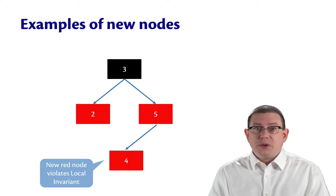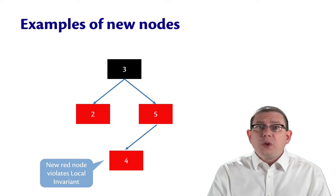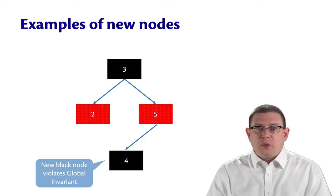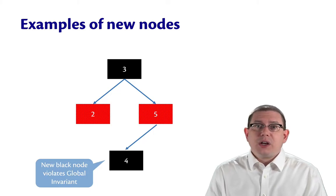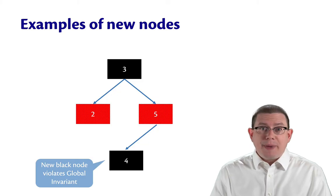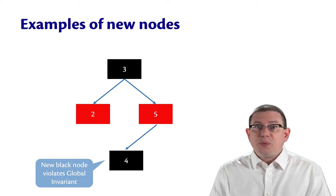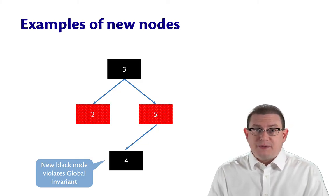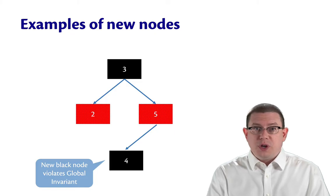So it's not safe to always color new nodes red. What if we colored it black? That violates the global invariant, because before we had one black node along each path. Now some paths have one and some paths have two. So black is also not safe as a color to always pick for new nodes.